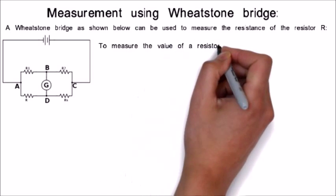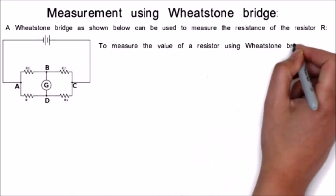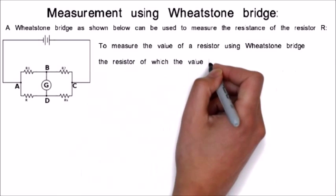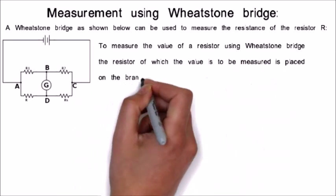To measure the value of a resistor using Wheatstone Bridge, the resistor of which the value is to be measured is placed on the branch AD.